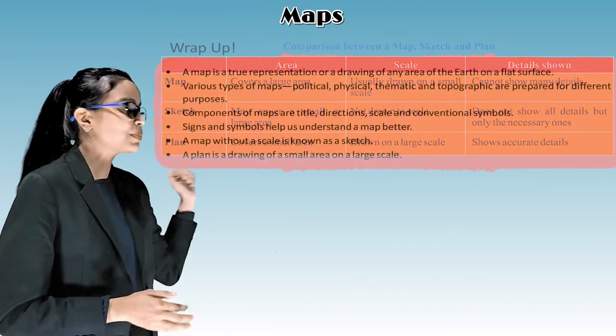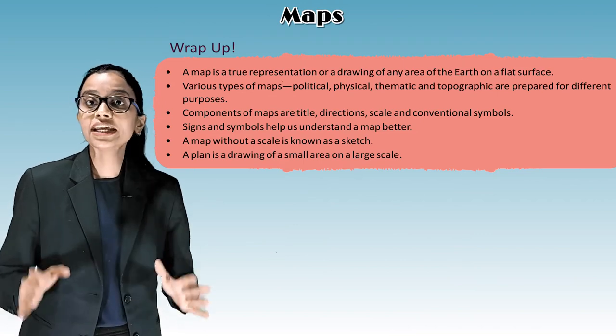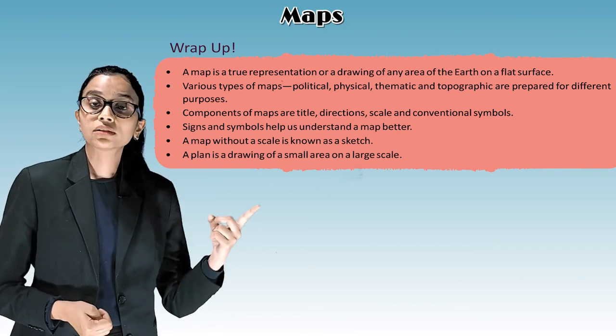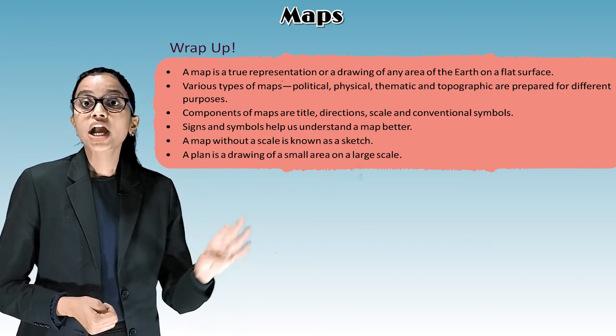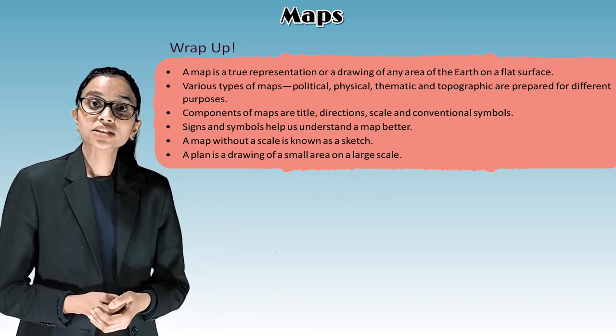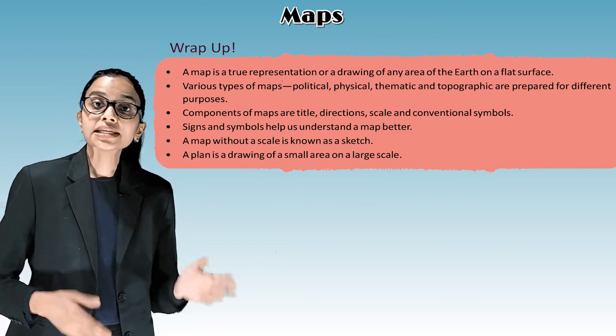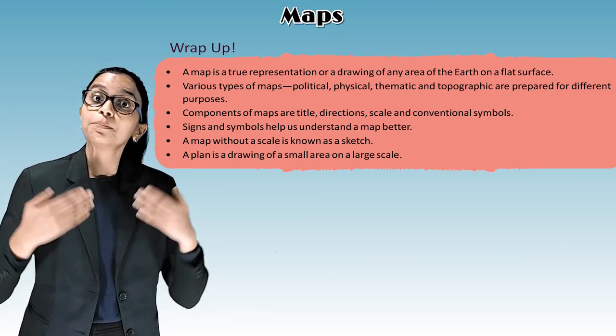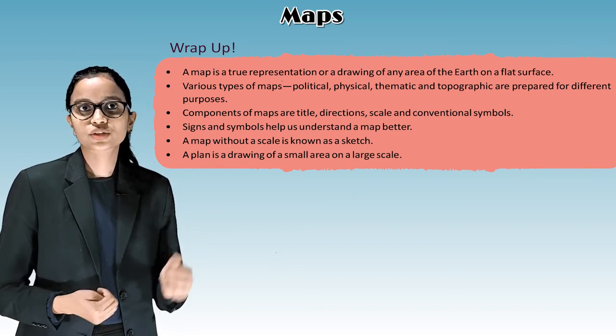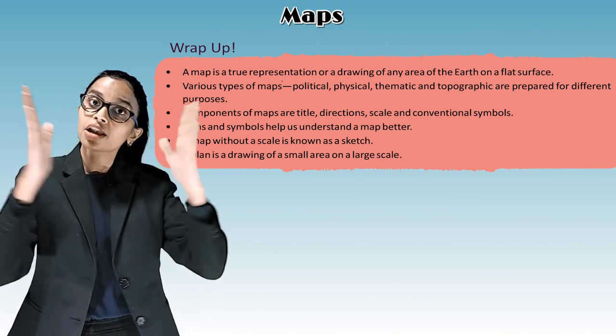So children, let's wrap up. A map is a true representation or a drawing of any area of the earth on a flat surface. Various types of maps - political, physical, thematic and topographic - are prepared for different purposes. Components of map are title, direction, scale and conventional symbols. Signs and symbols help us to understand a map better. A map without a scale is known as a sketch. And the last one is a plan is a drawing of a small area on a large scale.